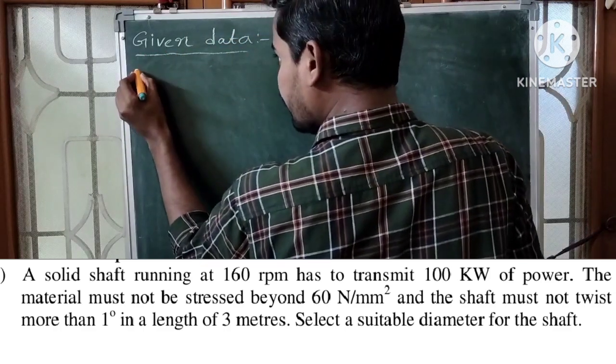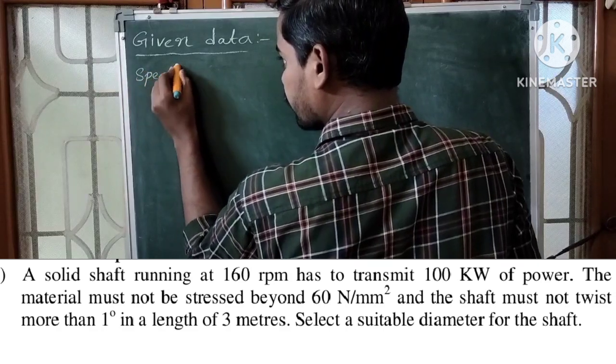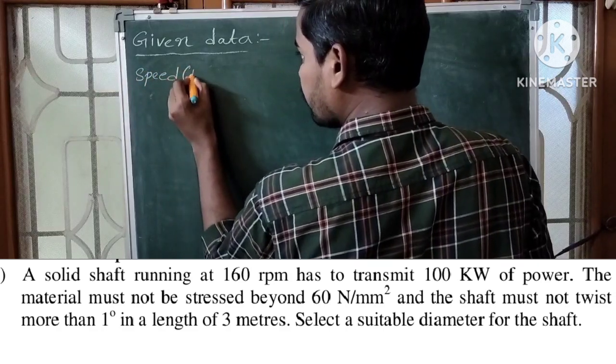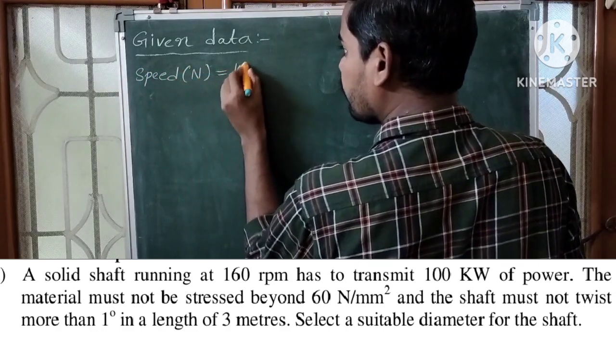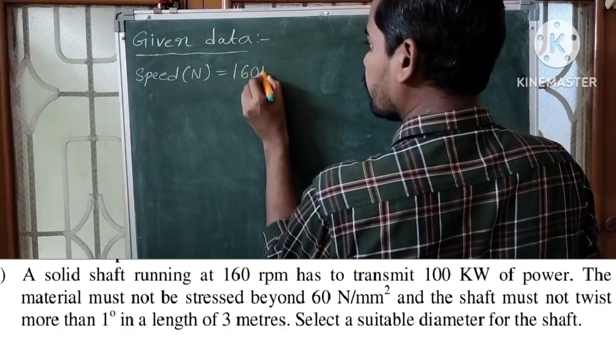First, let us list out the given data. Speed, denoted by capital N, is equal to 160 rpm.